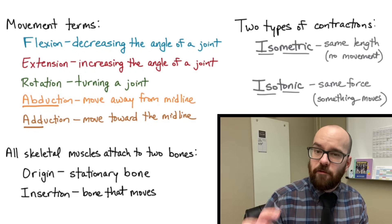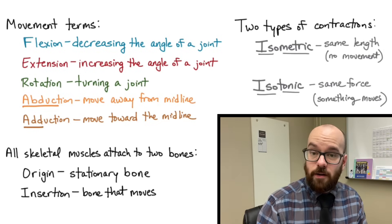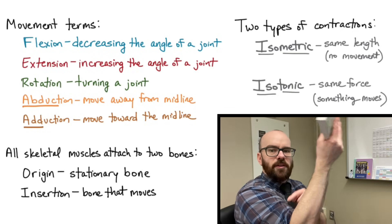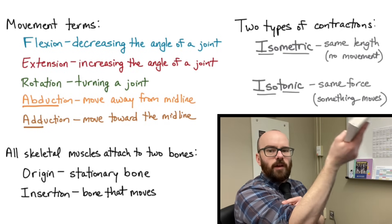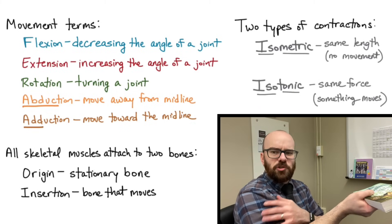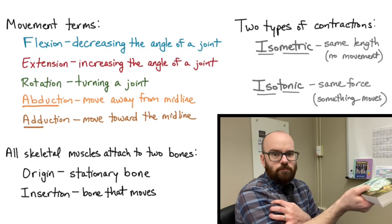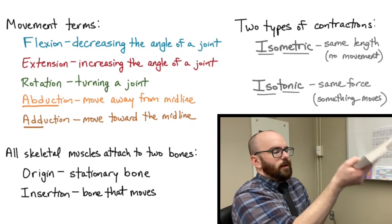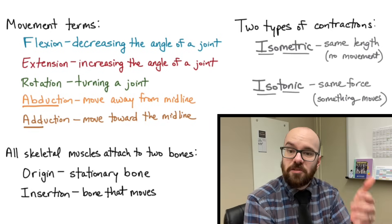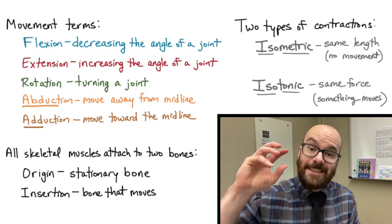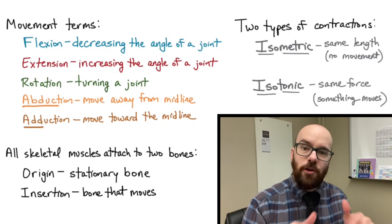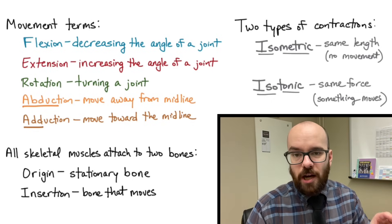The opposite is isotonic contraction, which means same force — this is when movement is happening. For example, lifting a book by contracting the bicep applies roughly the same force throughout the lift. If a weight were too heavy and nothing moved, you'd be changing the force you're applying, but when movement happens with about the same force throughout, that's isotonic. The main thing to remember: isotonic contractions involve movement, isometric contractions involve no movement.